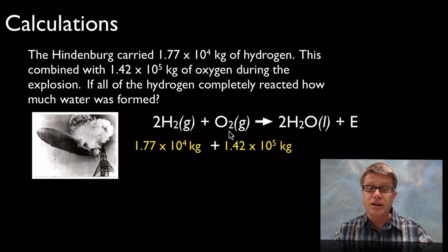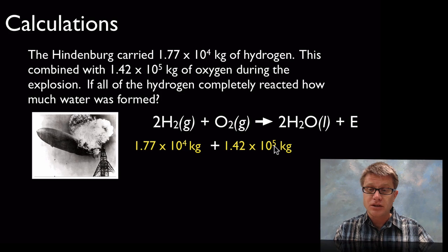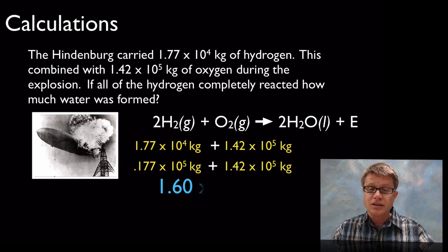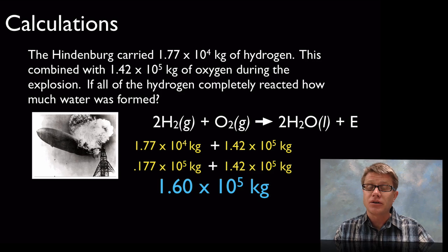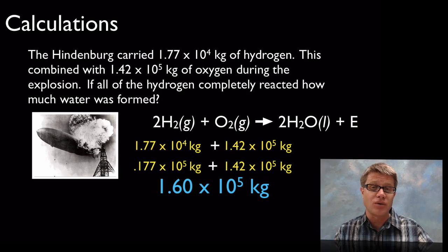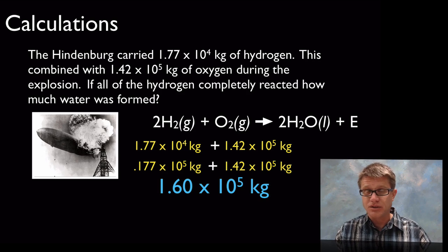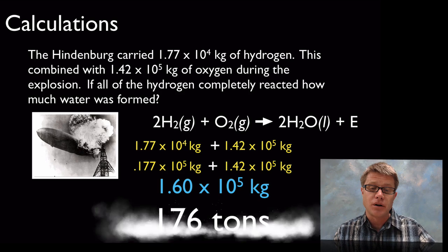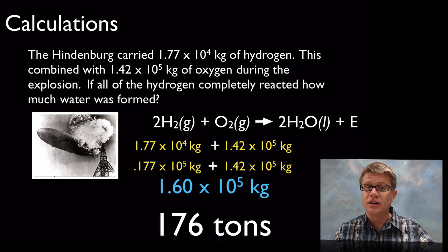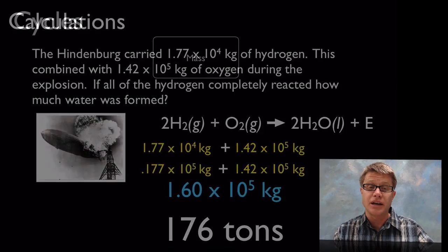If I were to solve this I'd write out the two masses we have before. They're written in scientific notation but these don't quite match up, so I may change this so that they match up. Then it makes it easier to add those. So we'd make 1.60 times 10^5 kilograms of water. Now most of that water wasn't liquid—it was probably vapor spread over a large area. If we were to quantify that, 176 tons of water were made during that Hindenburg explosion.